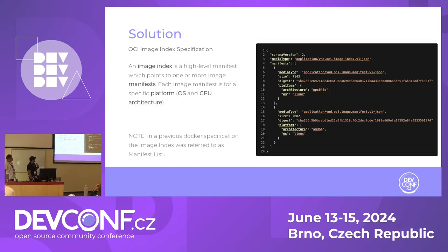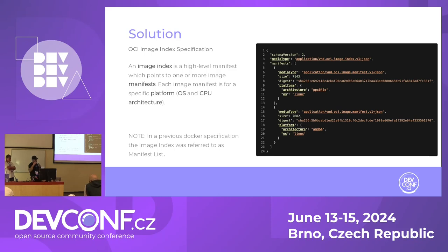Then we have the OCI image index specification. An image index is a high-level manifest that points to one or more image manifests. Each image manifest is for a specific platform — OS and CPU architecture. As you can see, on line three we have the media type, which is the image index. Then we have two manifests inside, like an array. The first one is for Linux PPC64, and the second one is for Linux AMD64. They point to a manifest, and the SHA on lines eight and seventeen points to the manifest for each specific architecture.